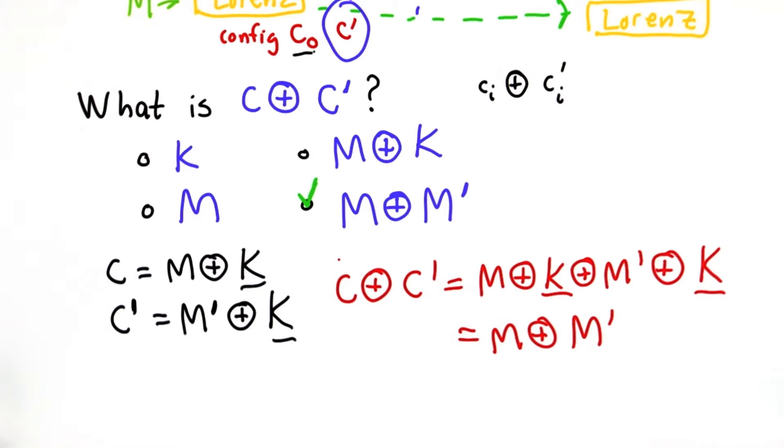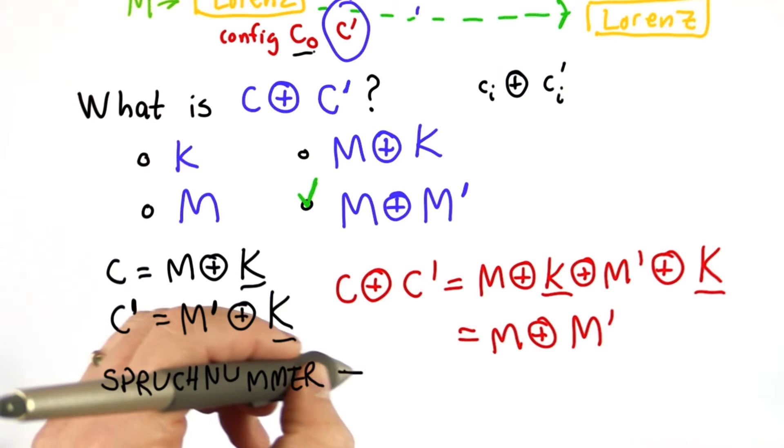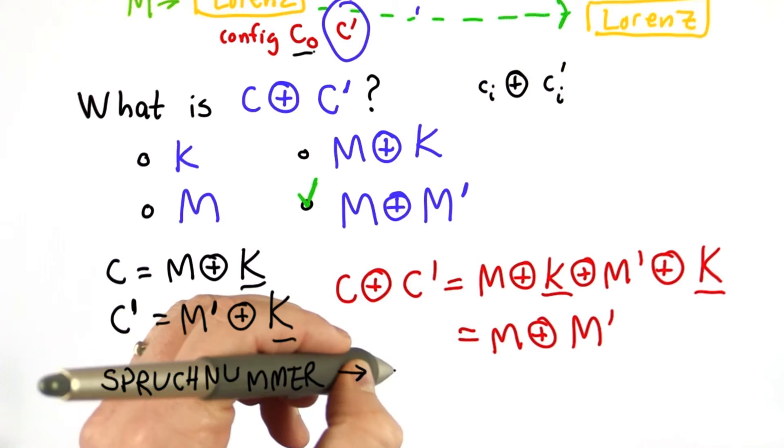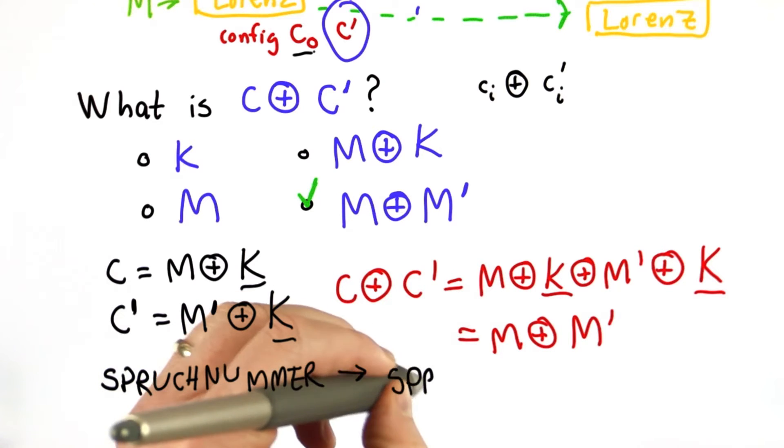And the reason for that was because of the abbreviations that were used in the transmission. An example would be if the original message has Spruck number, meaning serial number, well maybe in the retransmission it became an abbreviation Spruck number.